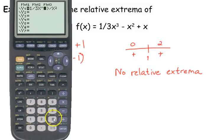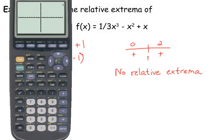One-third x cubed minus x squared plus x. And let's look at its graph. And that explains it.